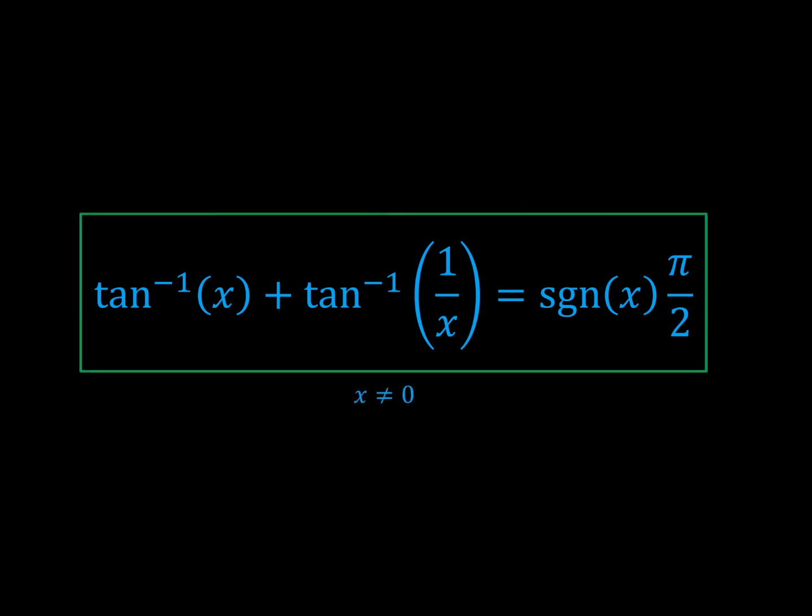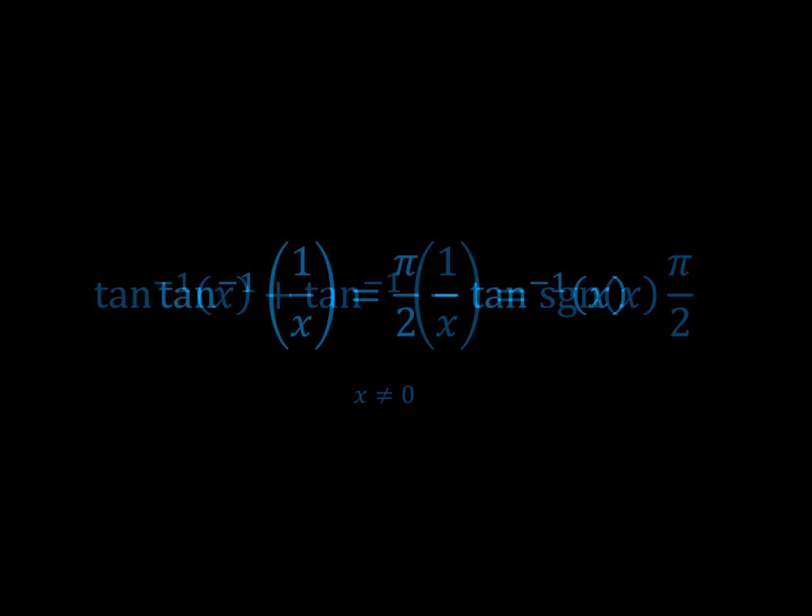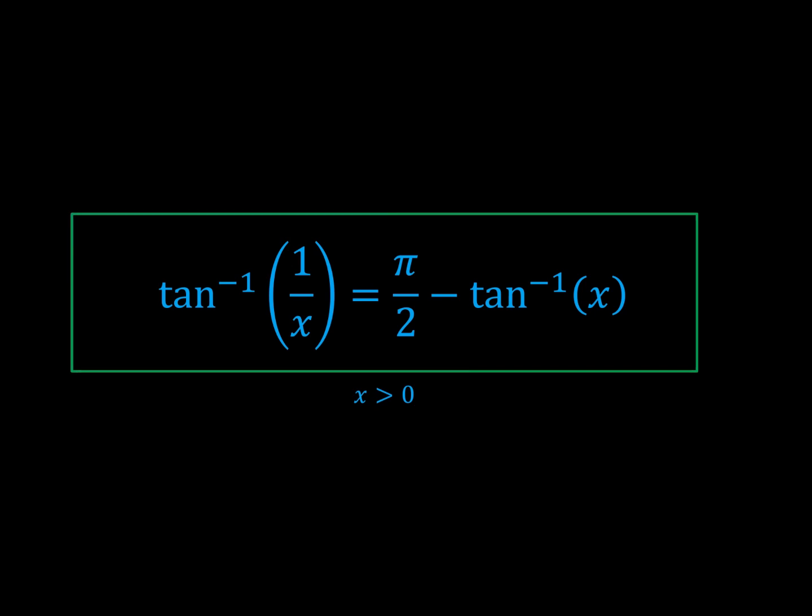Now, if we rearrange this and take x greater than 0, we get a much more useful form. The inverse tangent of 1 on x is complementary to the inverse tangent of x.